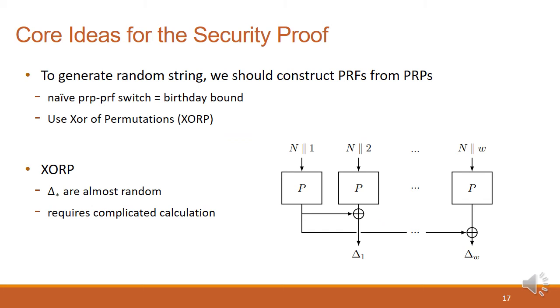Now, I will introduce the core ideas for the security proof. Since the ciphertext should look random, when constructing the pseudorandom permutation-based AE, we need to construct a pseudorandom function from the pseudorandom permutation, and we should use it to generate a random string. However, if we use naive PRP-to-PRF switch, the security cannot go beyond birthday bound. Therefore, in this research, we decided to use XOR permutations, or XORP in short. As you can see in the figure, in XORP, it encrypts W different inputs, and then computes W minus 1 outputs by XORing them. There are some recent results that the outputs of XORP are almost random. Therefore, we can construct a secure PRF with only one additional PRP using XORP.